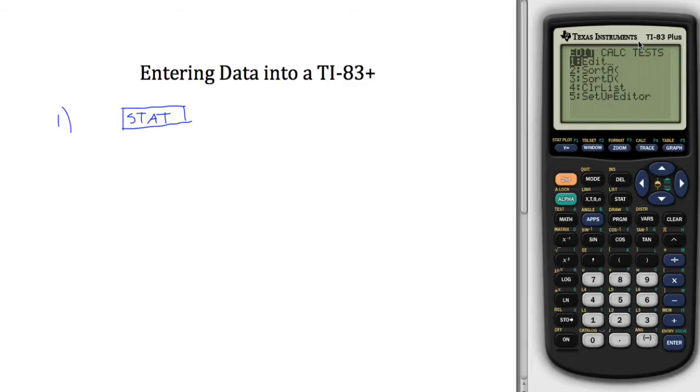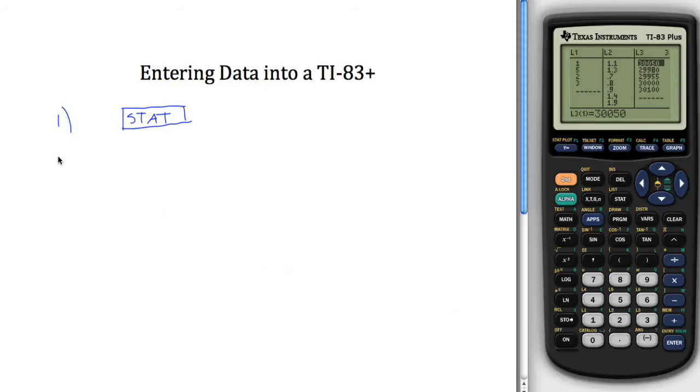The idea here is you have three different menus and then different things you can do within each menu. What you want to do when you want to enter data is under your first menu here, it's the first option where it says edit. So all you got to do is hit either enter or one. One would take you to the first thing, but since the first thing is already highlighted, you can just hit enter. Either way is fine. And something like this will pop up. So I guess step two is to hit enter.